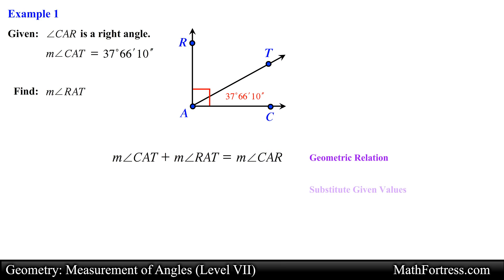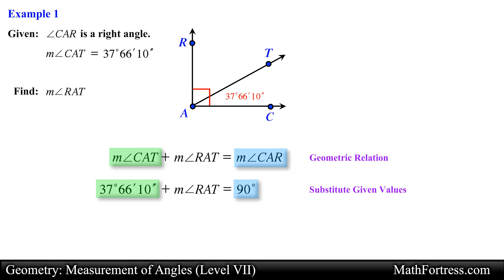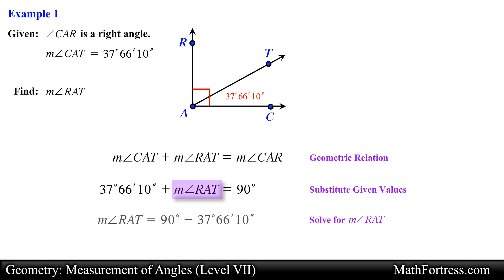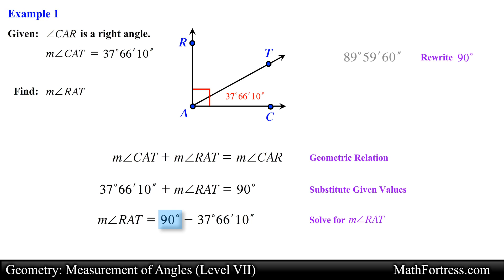We can now substitute the measurement of angle CAT and the measurement of angle CAR into this geometric relation. To solve for the unknown angle measurement we subtract the measurement of angle CAT from the measurement of angle CAR. Before we do this we need to write both angles in a subtraction-friendly form. The 90-degree angle can be written as 89 degrees 59 minutes 60 seconds after converting a degree into 60 minutes and converting 1 minute into 60 seconds.